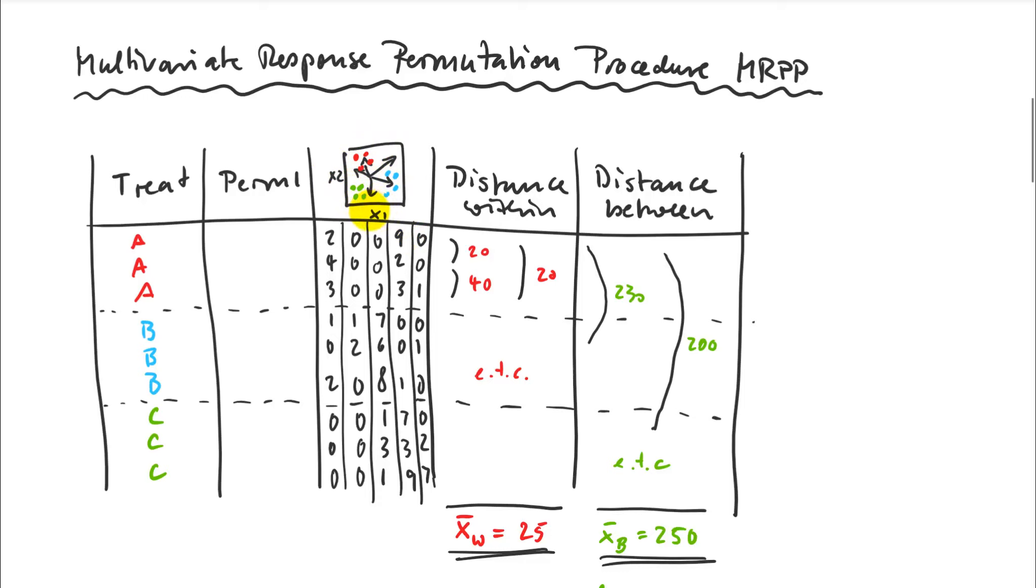I can visualize this in an ordination, let's say an NMDS with x1 and x2. Now I could calculate distances within these clusters or within my groups, within my treatments. I can also calculate distances from each point to every other point between my treatments. If I were to do this with frequency measures, I'm just calculating Euclidean distances. My distances within, between that red point and that other red point in multivariate space, will be smaller than my distances between.